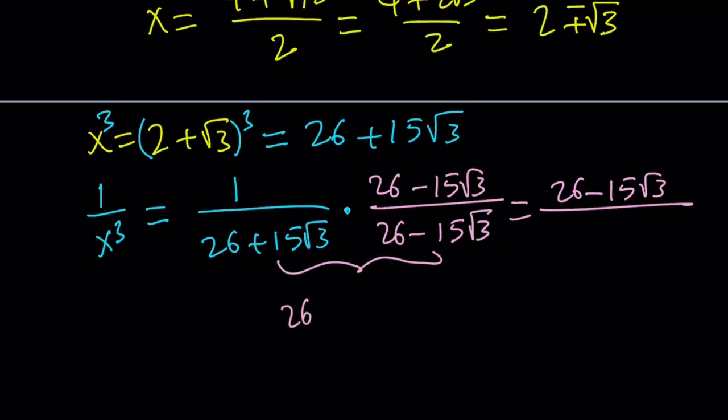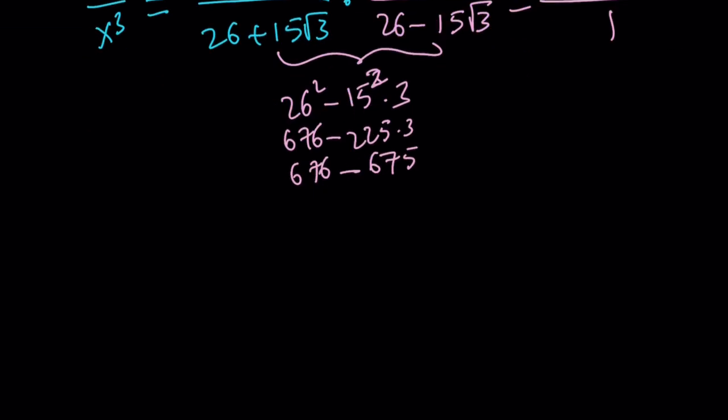From difference of 2 squares, this becomes 26 squared minus 15 squared times 3. I wrote a cube, but that's a square. Now, 15 squared is 225 times 3, and 26 squared is 676. So it's like 676 minus 675. So in other words, this is going to be 1. Which means the answer is 26 minus 15 root 3. So that's our 1 over x cubed.